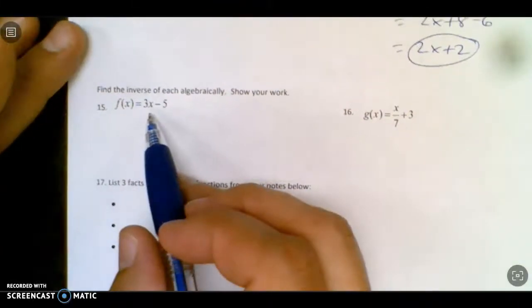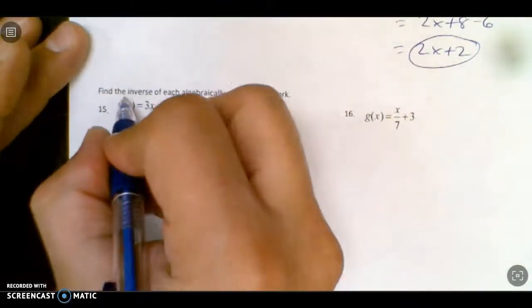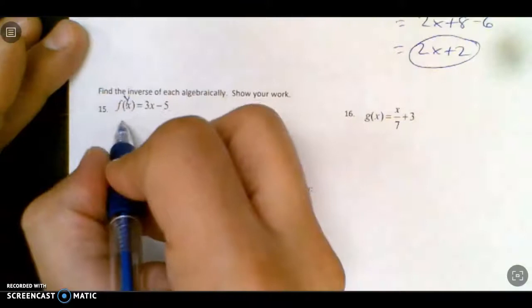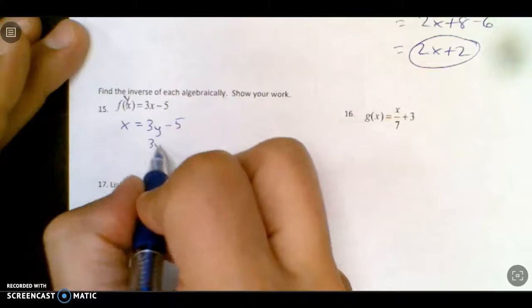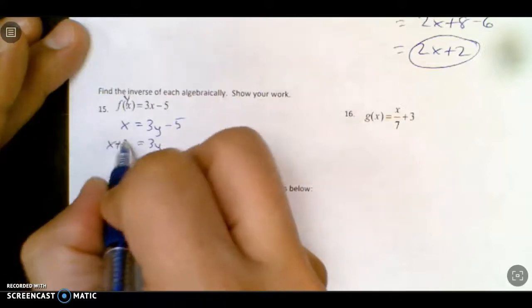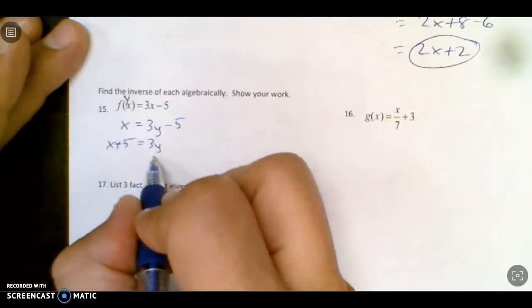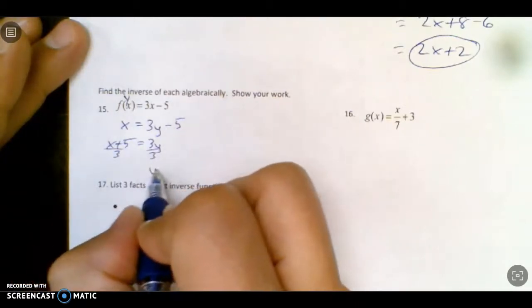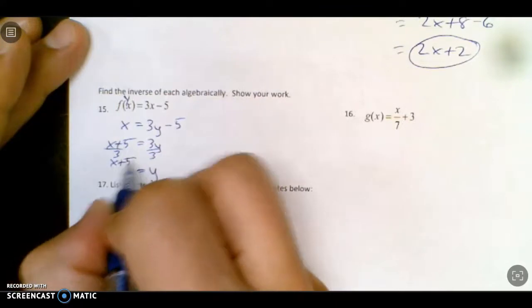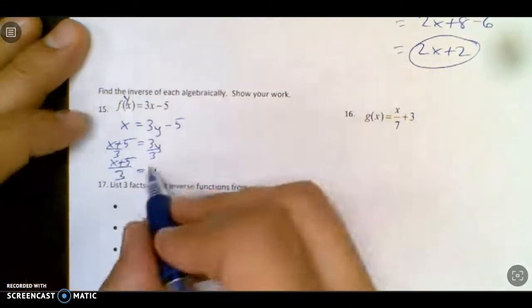So now we're going to find the inverse. And remember, inverse, if this guy's a y, inverse you switch the x and the y, and solve it back for y. And then we divide by 3. So y is x plus 5 over 3.